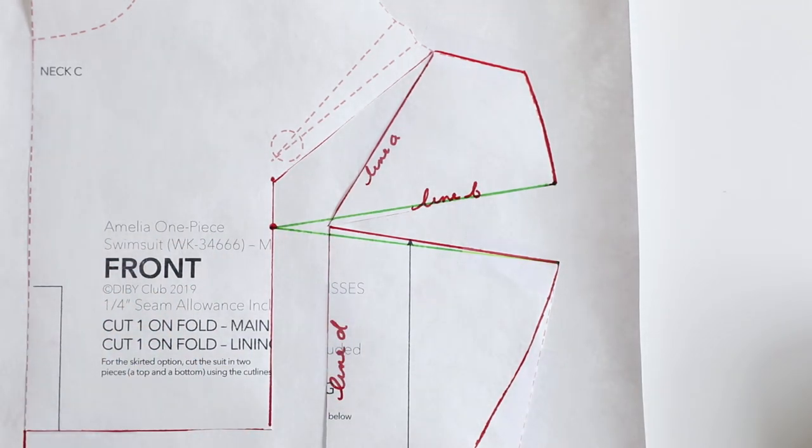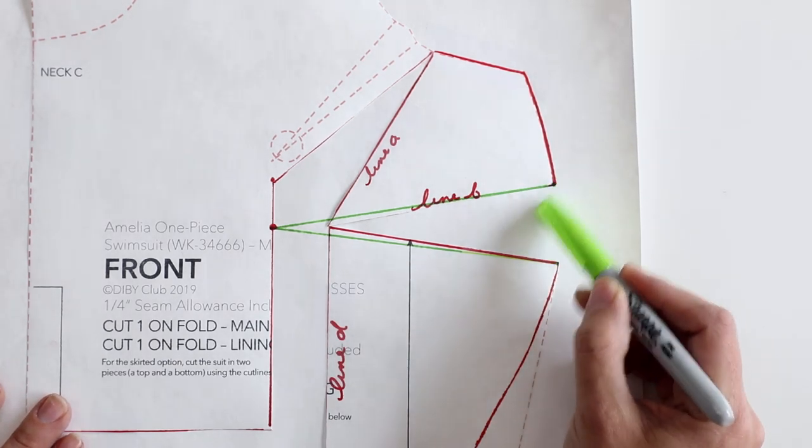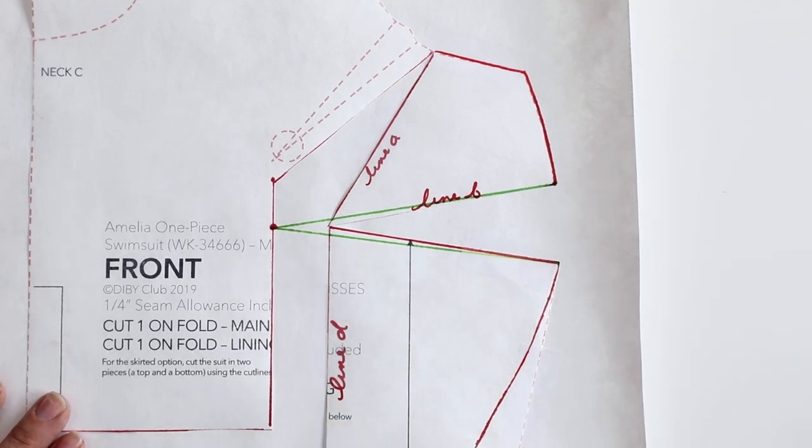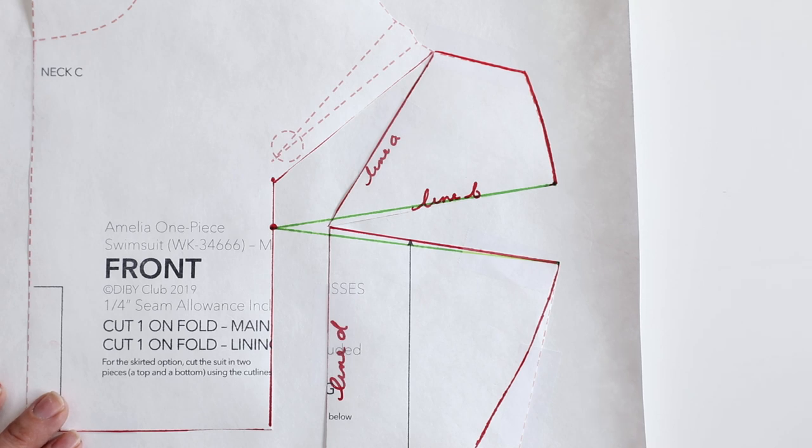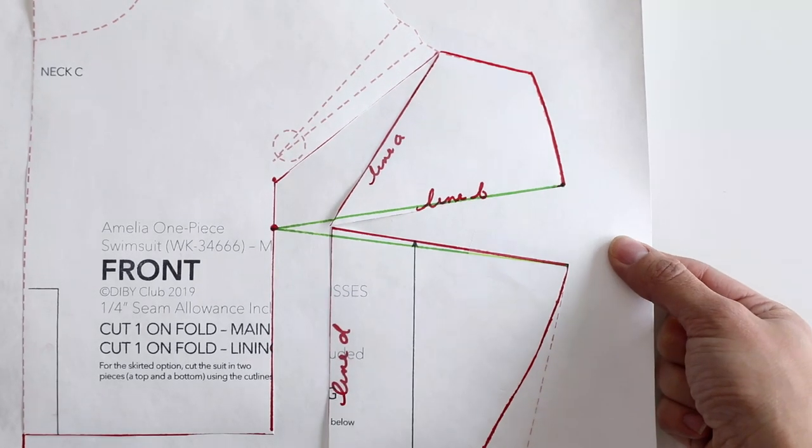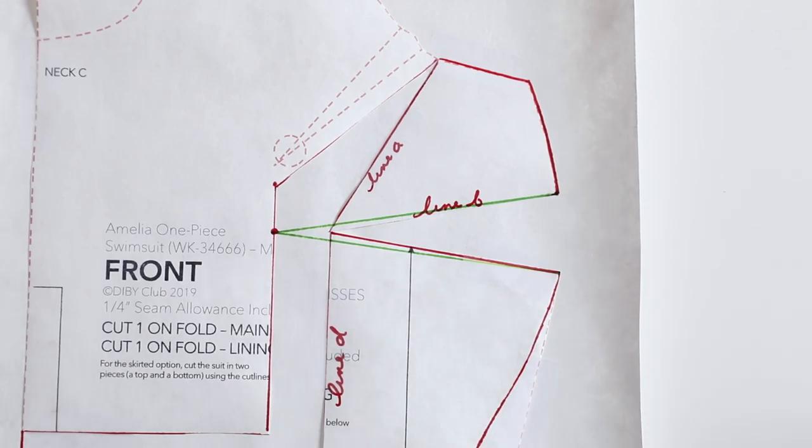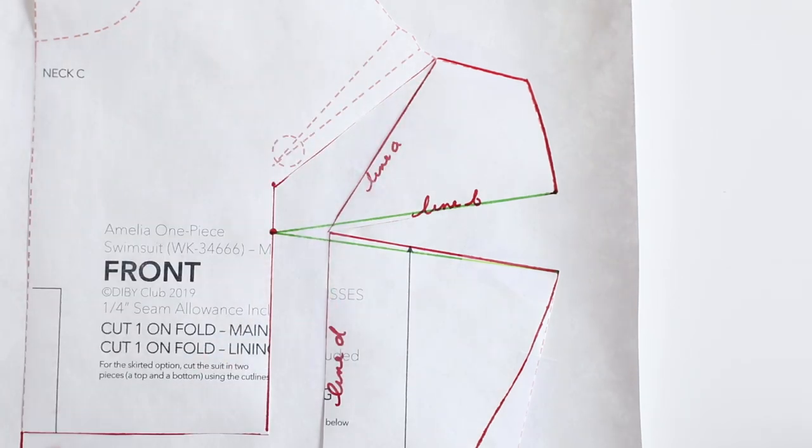And there is my new side dart. Now whenever you have either drawn a new dart or are adjusting an existing dart, you will want to add what is called dart bulk. Which is the little part here that either jets out or jets in depending on which way the dart is going to be laying. So we need to add in our dart bulk right here so that it matches up with the side seam correctly. Adding in dart bulk is very, very easy. All you will want to do is make sure that you have your paper already taped in place behind your adjustment. So I am going to go ahead and just add another couple pieces here to keep it all secure.